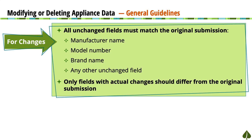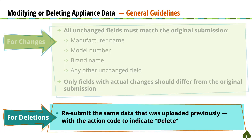For example, when uploading product data, you'll have to input the manufacturer name, model number, brand name, and other product-specific data. Only the fields you are changing should differ from the original submission. When deleting product data, you will resubmit the same data that you previously uploaded, but use the action code to indicate delete.